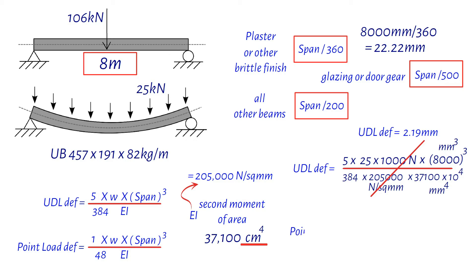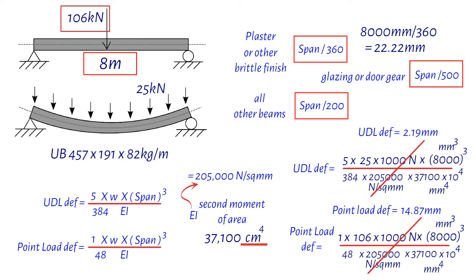For the concentrated load of 106 kilonewtons, it's similar. Take 1 divided by 48, multiply by 106 kilonewtons times 1000, and then by 8,000 cubed. Divide that by the same constants, and you get 14.87 millimeters.